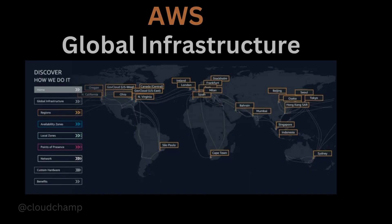In this video we will look at AWS global infrastructure, understanding what regions are, how to use them, what availability zones are, what edge locations are, and more.